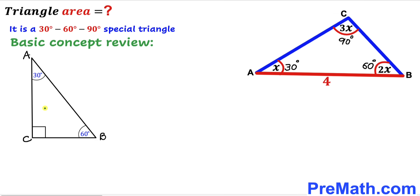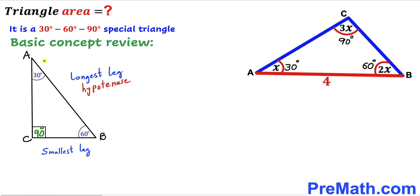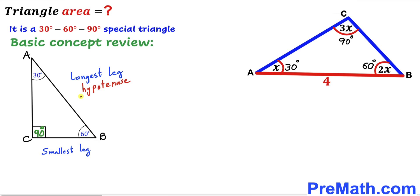Before we proceed, let me review the special 30-60-90 triangle. In this right triangle, 30 degrees is the smallest angle and 90 degrees is the largest angle. The side opposite the smallest angle is the smallest leg, while the side opposite the largest angle is the longest leg, called the hypotenuse. In a 30-60-90 triangle, the longest leg is always twice the smallest leg. If the smallest leg is a, the longest leg is 2a, and the third leg is a times the square root of 3.